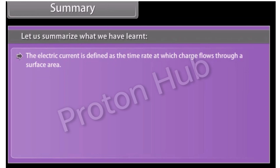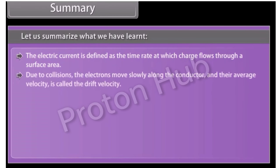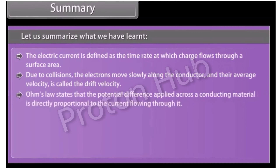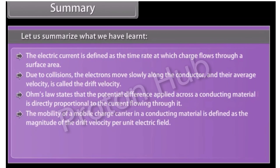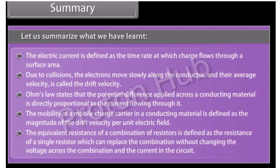In summary: the electric current is defined as the time rate at which charge flows through a surface area. Due to collisions, electrons move slowly along the conductor and their average velocity is called the drift velocity. Ohm's law states that the potential difference applied across a conducting material is directly proportional to the current flowing through it. The mobility of a mobile charge carrier is defined as the magnitude of the drift velocity per unit electric field.